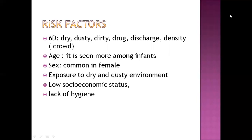Risk factors of trachoma can be described using the 6D mnemonic. First is dry — dry eye, which is susceptible to trachoma. Second is dusty — environmental dust. Third is dirty — where there is lack of hygiene. Fourth is drug — some drugs lower the immunity of the body, making a child susceptible to trachoma. Fifth is discharge — trachoma has a characteristic feature of discharge.